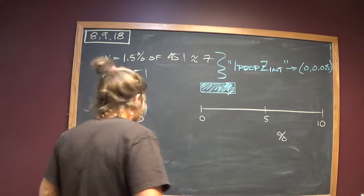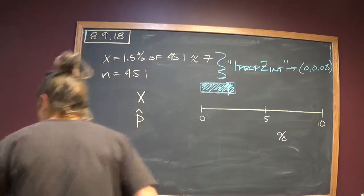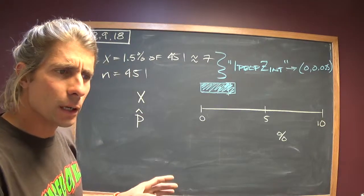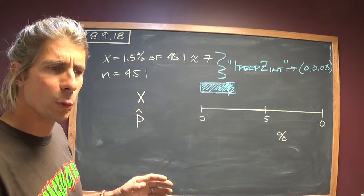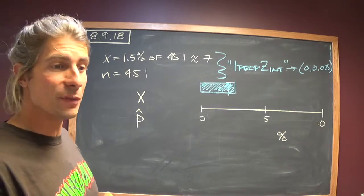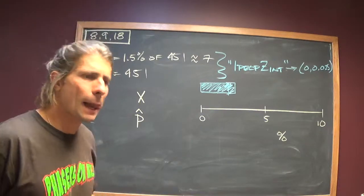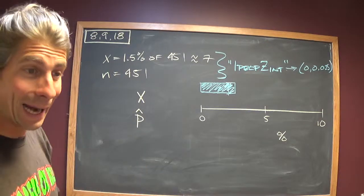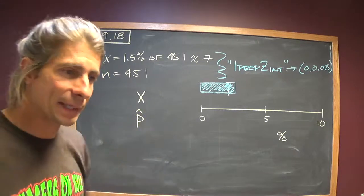So what they asked us to do was, let's see, they studied in the first eight years 1.5% of the 451 members of the 50 Plus Fitness Association died. We are interested in the proportion of people over 50 who ran and died in the same eight-year period. We'll come back to that.